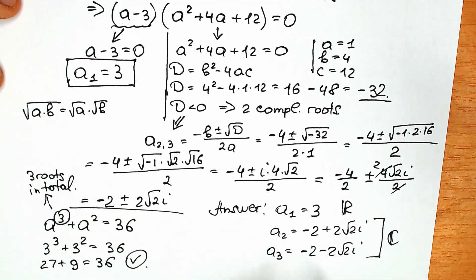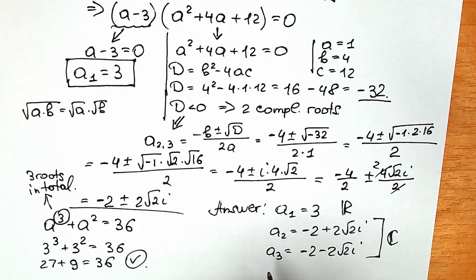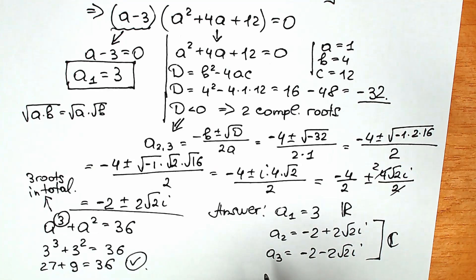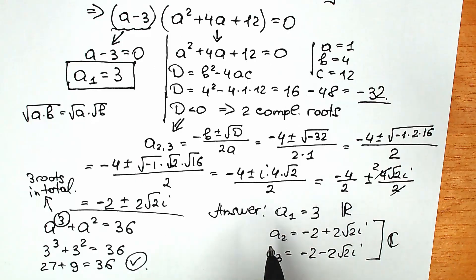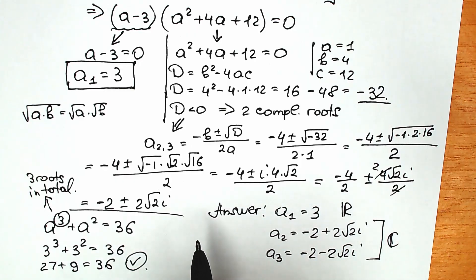So the final answers are: a₁ = 3 (real), a₂ = minus 2 plus 2√2·i, and a₃ = minus 2 minus 2√2·i (two complex roots). You can also see a graph showing the points of intersection from a geometry perspective. Thank you everyone for watching this video. I really hope you understand and learned something new. If you want to write your response in the comments, please do — it inspires me to make new content every day. I'm really grateful, I really appreciate it. Wish you all the best, take care of yourself, and see you in the next video. Have a great day!